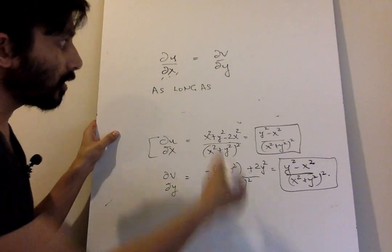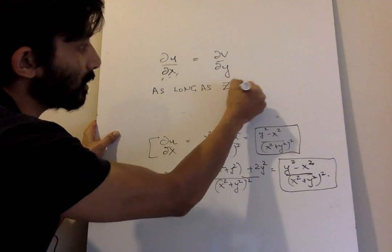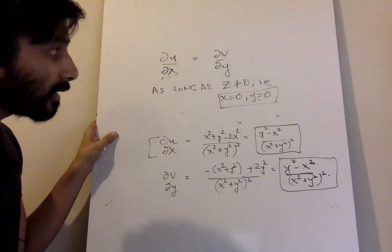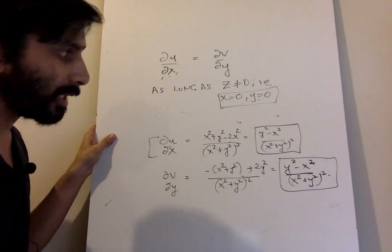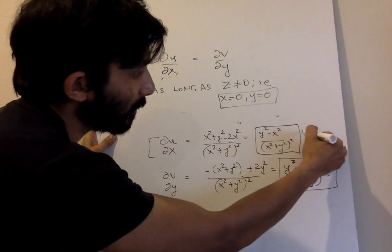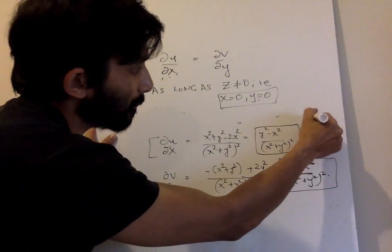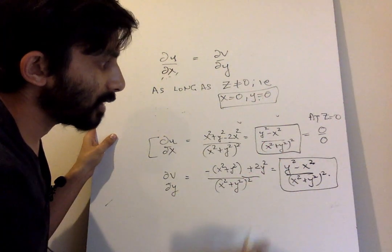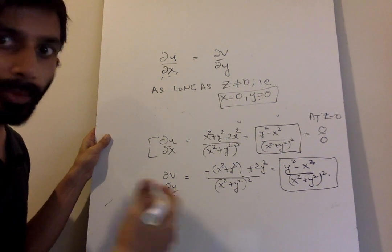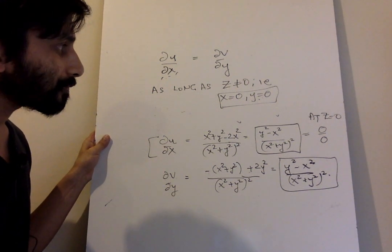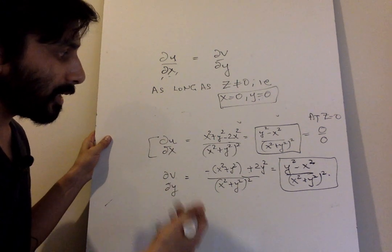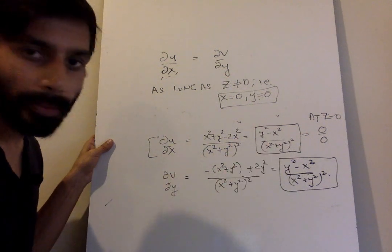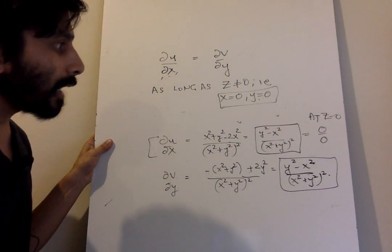This equality holds as long as x and y are not simultaneously zero — in other words, as long as z ≠ 0. When x and y are both simultaneously zero, putting x = 0 and y = 0 into these expressions gives the indeterminate form 0/0. It's not valid to equate two quantities both of the form 0/0. Similarly, for ∂u/∂y and ∂v/∂x we get an expression of the form 2xy/(x²+y²)², which is also 0/0 at the origin.